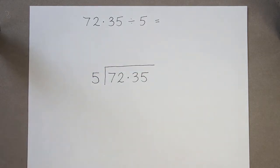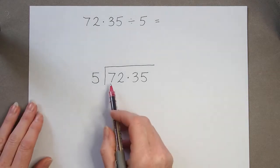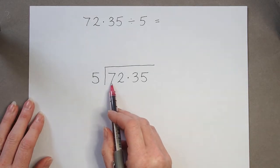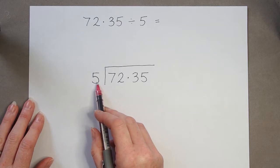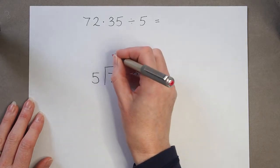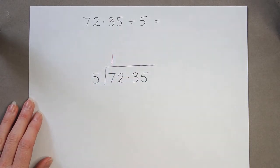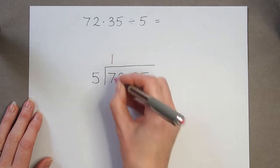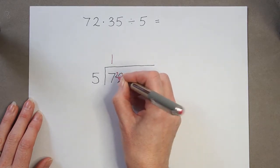So just as we would normally, we start here and say seven divided by five is one. One five is five, so that means there are two as a remainder.